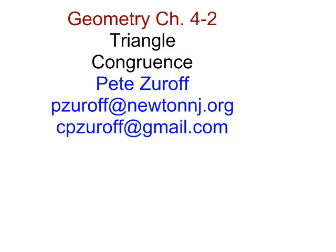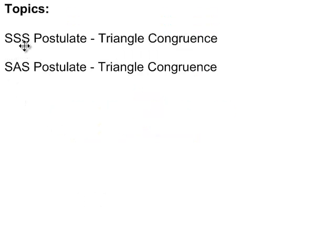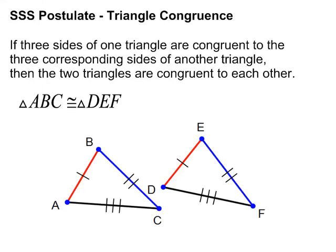In this Chapter 4-2, we're going to investigate triangle congruence. Specifically, we're going to talk about the side-side-side postulate and the side-angle-side postulate. The side-side-side postulate says that if three sides of one triangle are congruent to three corresponding sides of another triangle, then the two triangles have to be congruent to each other.